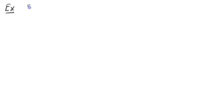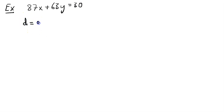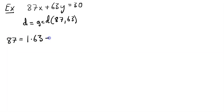Let's take one more example. We want to find all solutions to a Diophantine equation — let's say 87x + 63y = 30. We follow the same technique. First, we find d, the greatest common divisor of 87 and 63, using Euclid's algorithm.